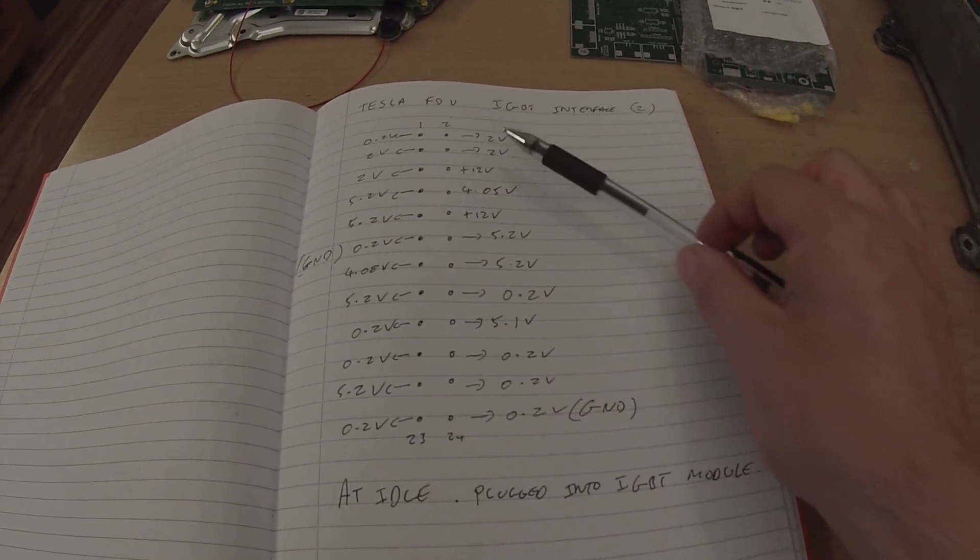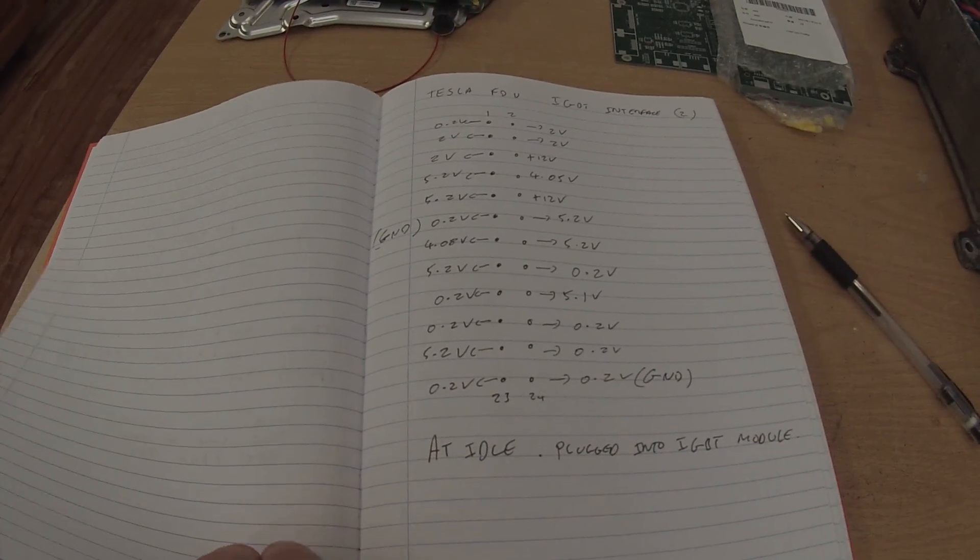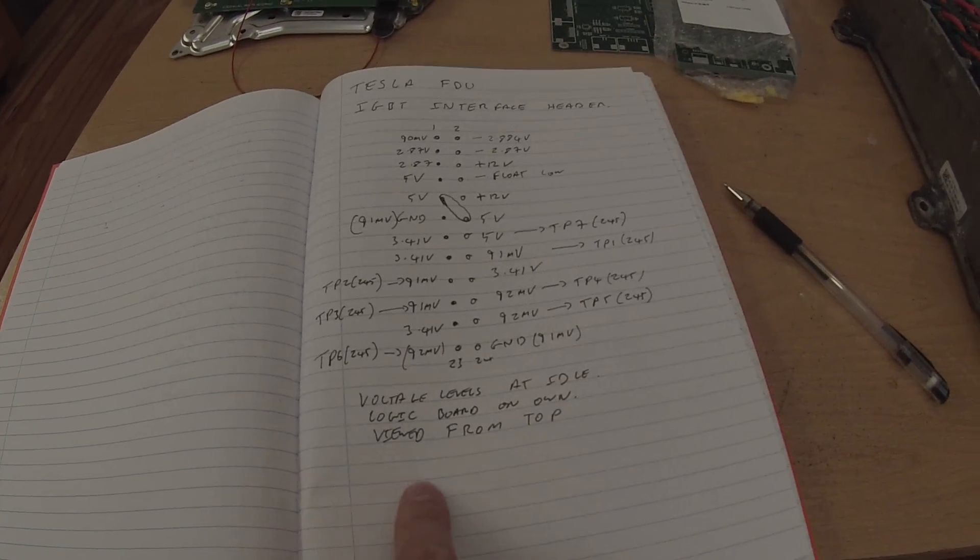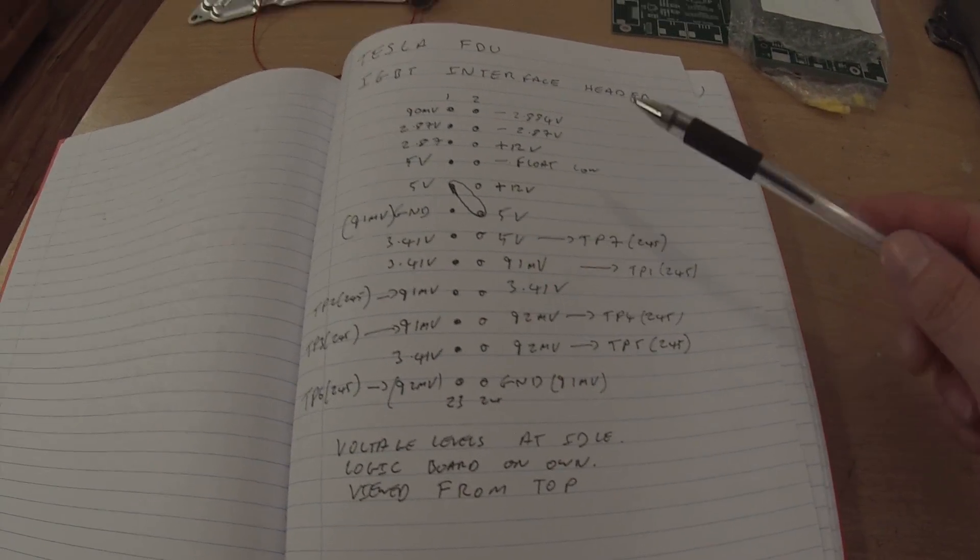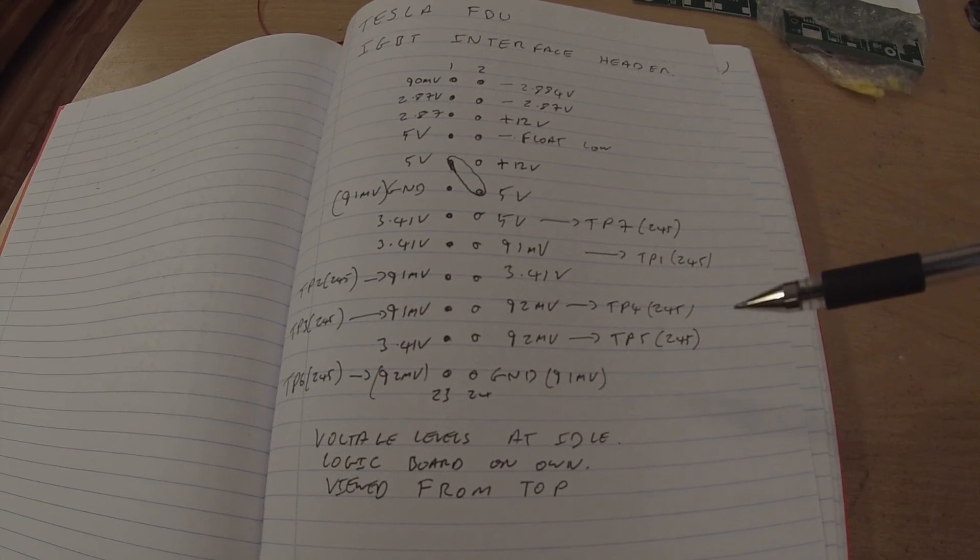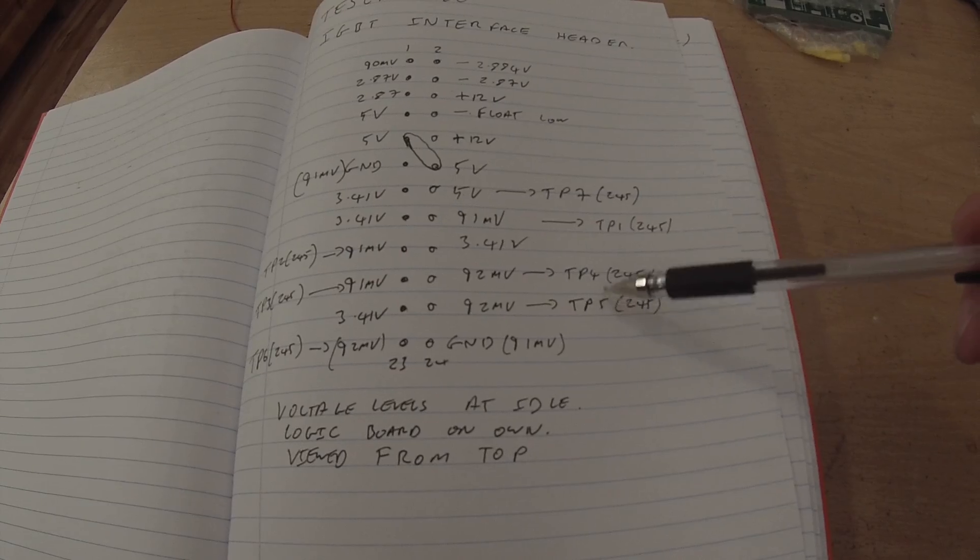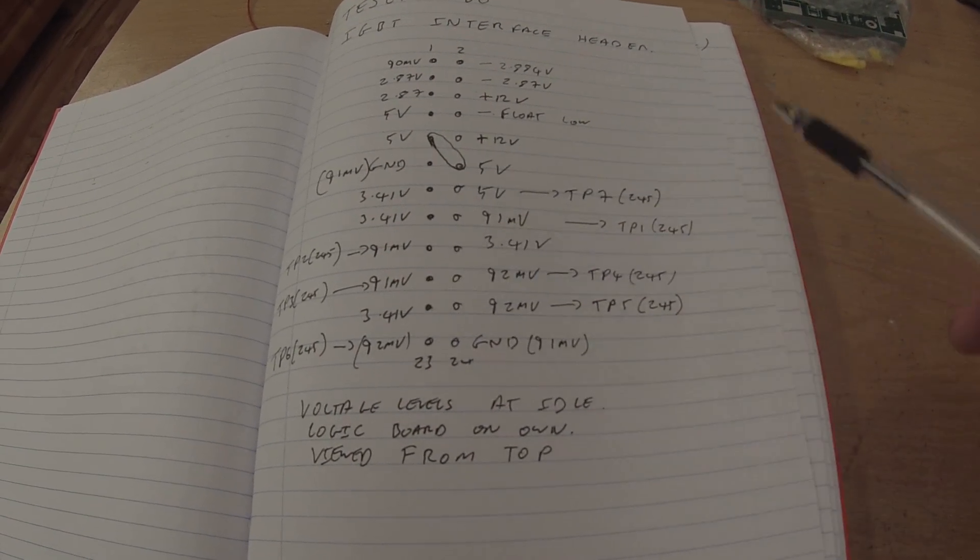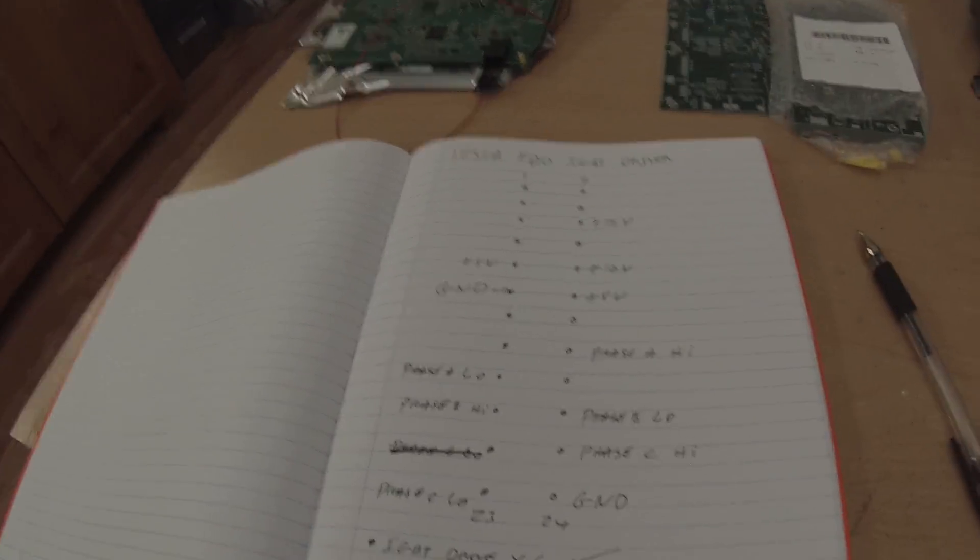Here's another one, kind of similar but measured to chassis ground. Go back even further, that's the logic board on its own, just powered up on the bench minus the IGBT driver stage. We started looking at what some of these levels were and where they were going on the PCB. That's enabled us to get to a master diagram here.